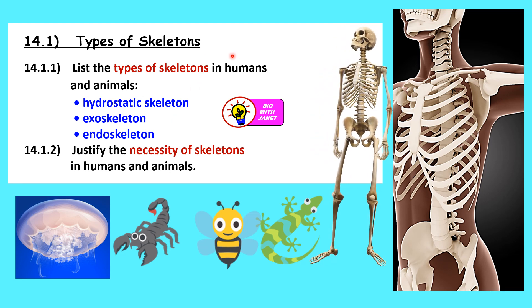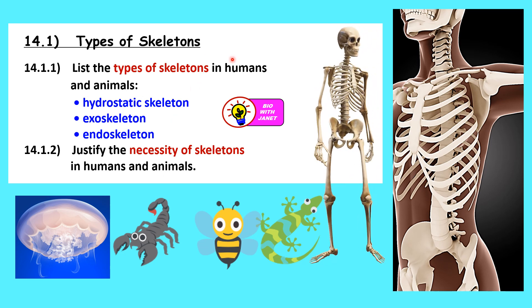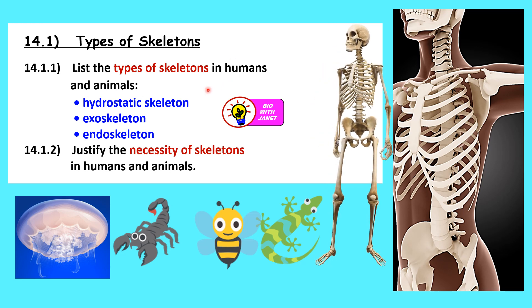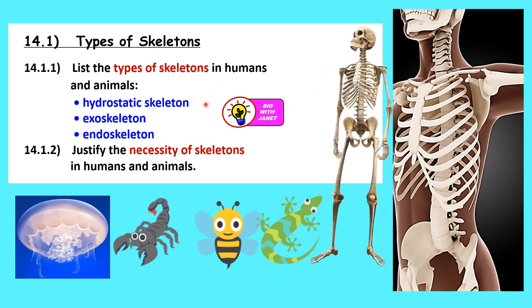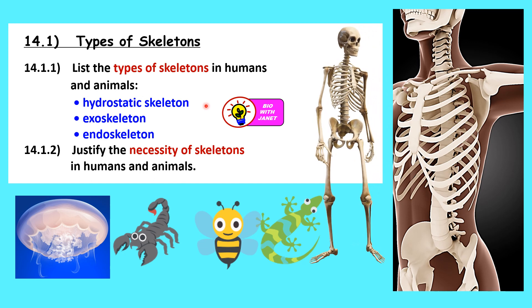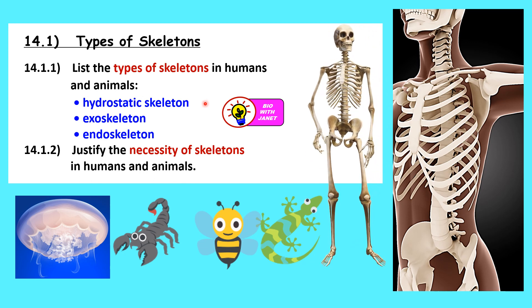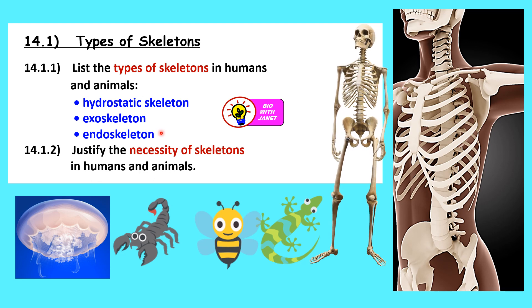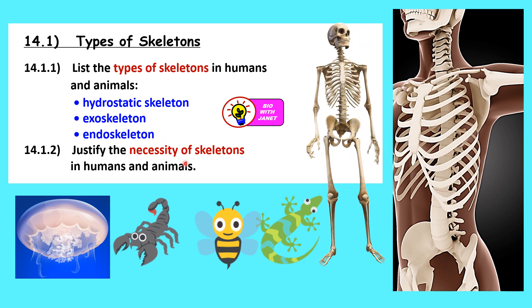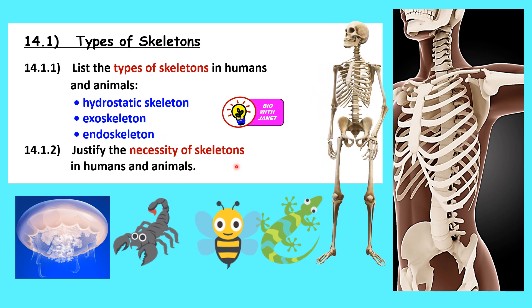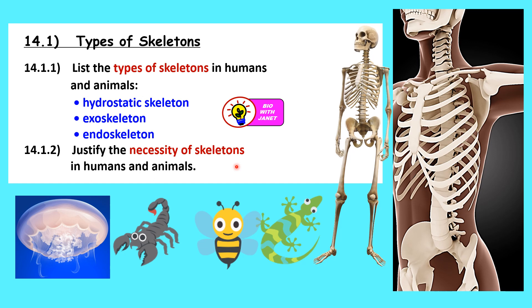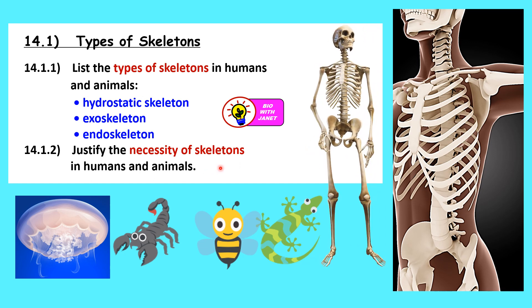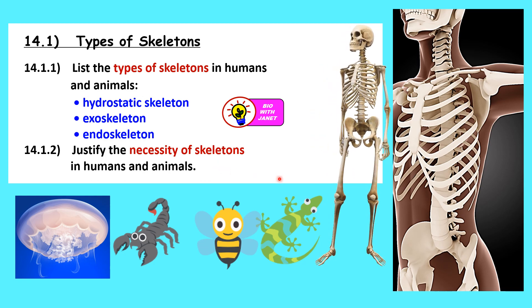The learning standards are as follows. 14.1 types of skeletons. Firstly, we should be able to list the types of skeletons in humans and animals — the hydrostatic skeleton, the exoskeleton, and the endoskeleton. Secondly, we should be able to justify the necessity of skeletons in humans and animals — what are the roles played by the skeletons?